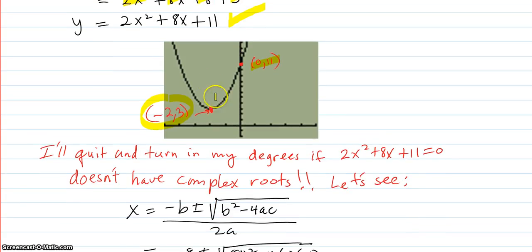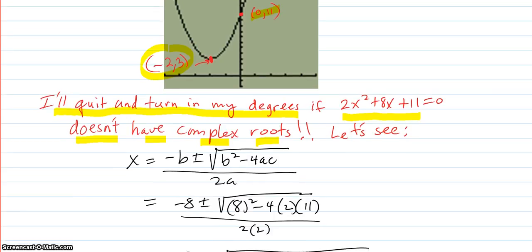And it's one of those graphs that does not cross the x-axis. So I'll quit and turn in my degrees if 2x² plus 8x plus 11 equals 0 doesn't have complex roots. Because it's supposed to have complex roots because the graph does not touch the x-axis. It doesn't cross. So let's see.